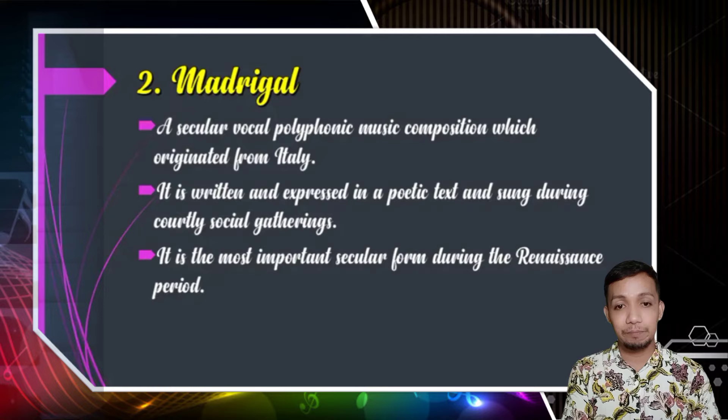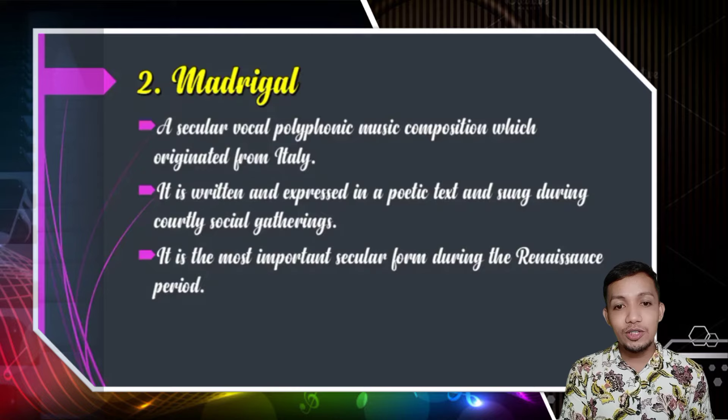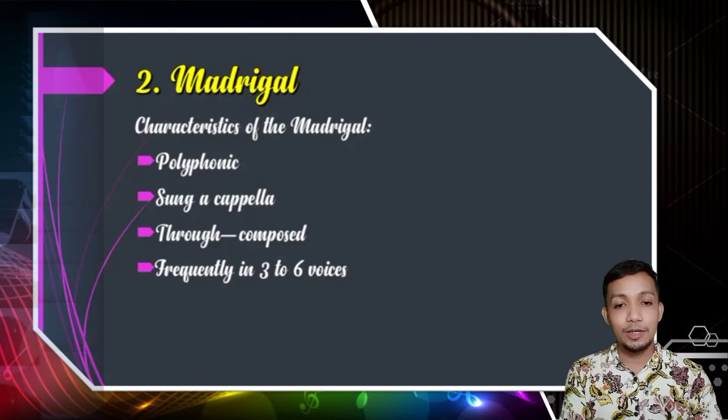The second vocal music of the Renaissance period, aside from Mass, was Madrigal. It was a secular vocal polyphonic music composition which originated from Italy. It is written and expressed in a poetic text and sung during courtly social gatherings. It is the most important secular form during the Renaissance period. Madrigal music characteristics include the following: polyphonic, sung a cappella, and through-composed.